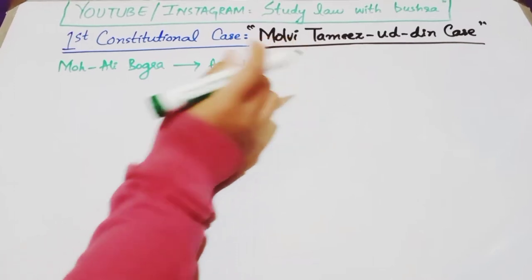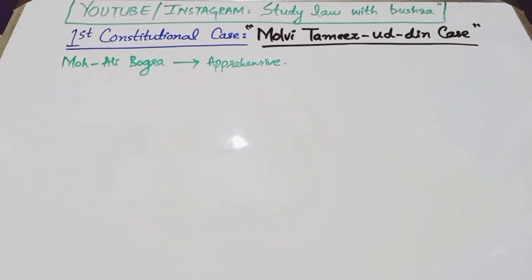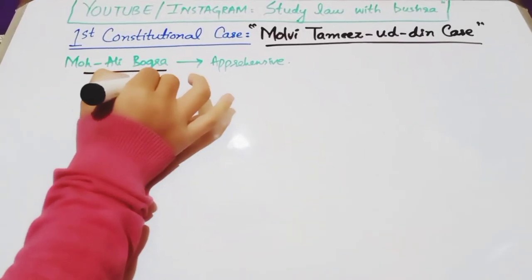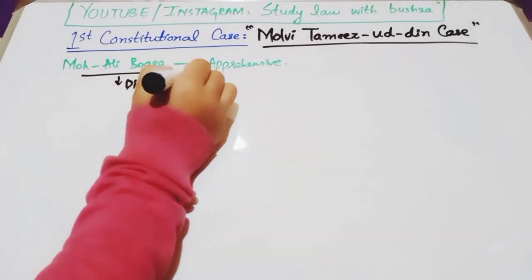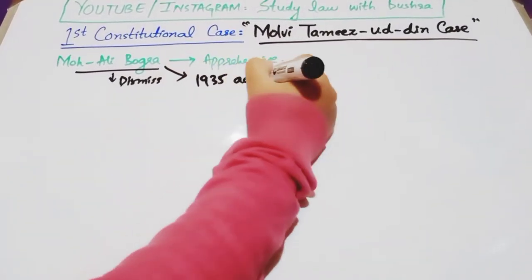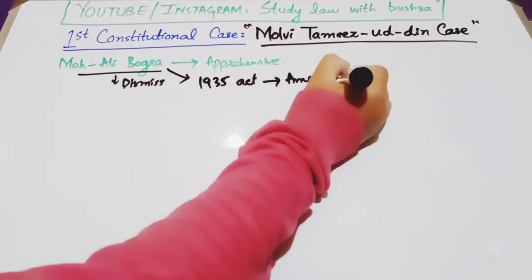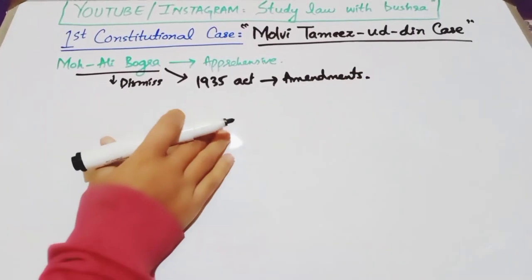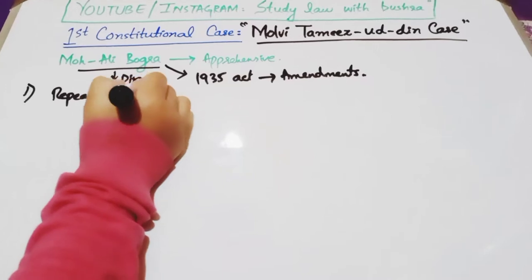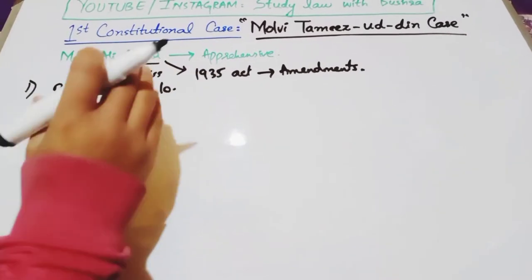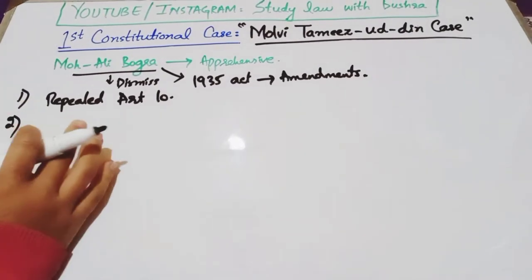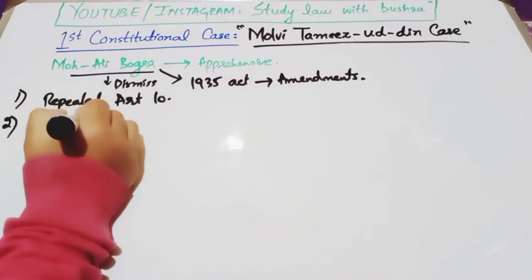ان کو یہ خدشہ تھا کہ جس طرح governor general نے Article 10 کے تحت خواجہ نظام الدین کو dismiss کیا، وہ مجھے بھی dismiss کر سکتا ہے۔ تو جیسے ہی انہوں نے office hold کی، انہوں نے Government of India Act 1935 میں amendments کیں اور سب سے پہلے Article 10 کو ہی repeal کر دیا — یعنی governor general کی یہ power ختم کر دی۔